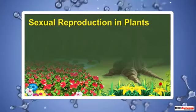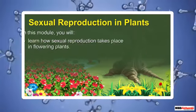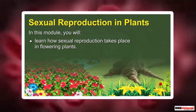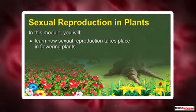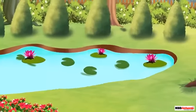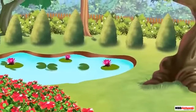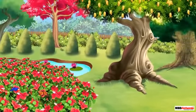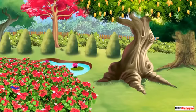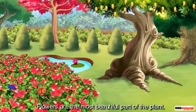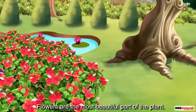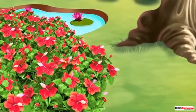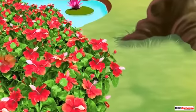Sexual reproduction in plants. In this module you will learn how sexual reproduction takes place in flowering plants. It is spring season and flowers are blooming on the trees — it is indeed a beautiful sight. Flowers attract all of us; they are the most beautiful part of the plant. You already know that flowers are not present only to add beauty to the plant.